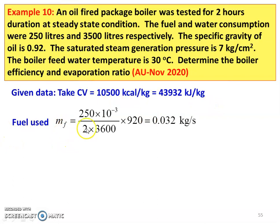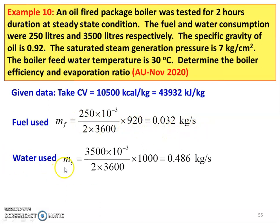Mass of the fuel used: MF equals 250 liters for 2 hours — that is the data given in the problem. So, 250 divided by 2, into 3600, into 10 to the power minus 3 to convert into cubic meters, into 920 to convert into kilograms per second. This gives 0.032 kilograms per second. Similarly, water used, or steam produced: MS equals 3500 liters for 2 hours. So, 3500 into 10 to the power minus 3 into 1000 to convert into kilograms, divided by 2 into 3600 to convert into seconds, which is 0.486 kilograms per second.